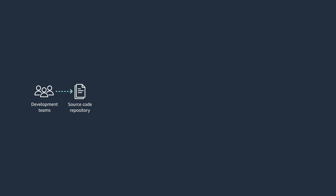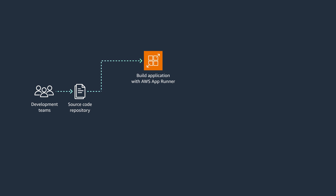Now let's examine the process of deploying containerized applications and APIs using AppRunner. The first approach is to use a source code repository. Development teams engage in their designated development environments, thereafter committing their code changes to Git or any other source code repository. Next, you will need to configure the Git connection details with AWS AppRunner, then configure the command required to build the application. For example, the NPM install command is required for a Node.js-based application.